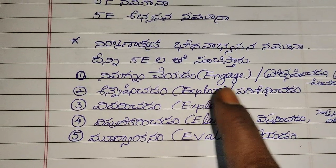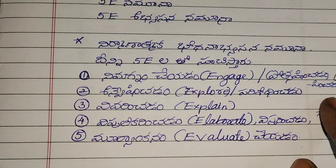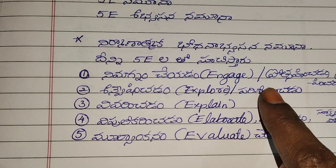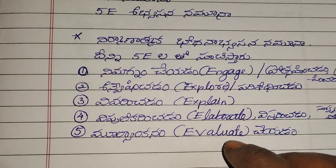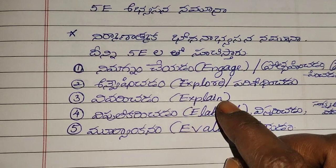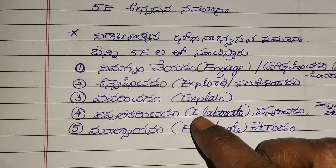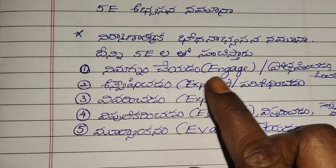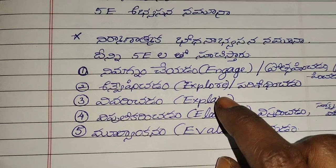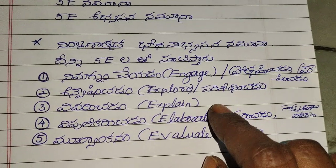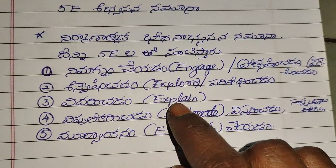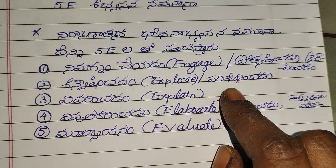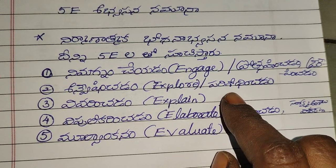For example — Engage: take the example of a Rainbow. Explore: Rainbow. Then next — Viveri: Explain.